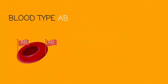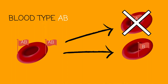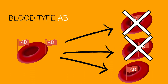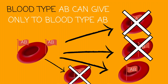Now we're working with blood type AB. AB will be able to give to any blood type representing AB — and that's AB together, not A or B separately. So will it be able to give to A? No, it won't. Will it be able to give to B? No, it won't. Will it be able to give to AB? Yes, it will. Will it be able to give to O? No, it won't. So blood type AB can only give to blood type AB.